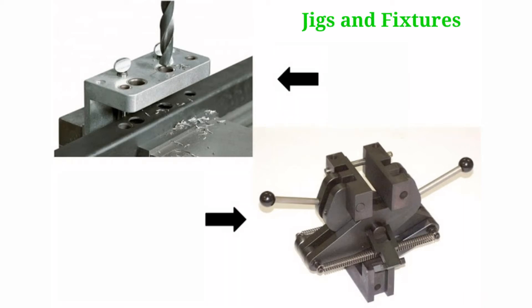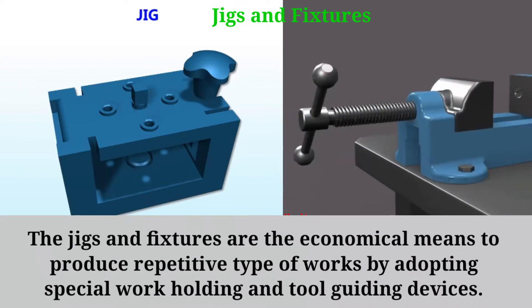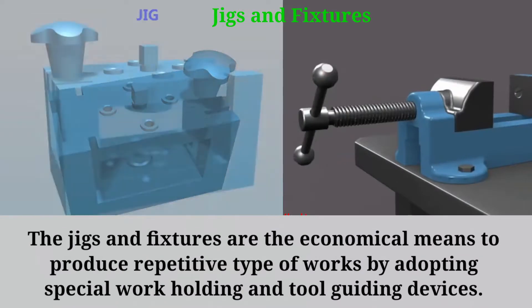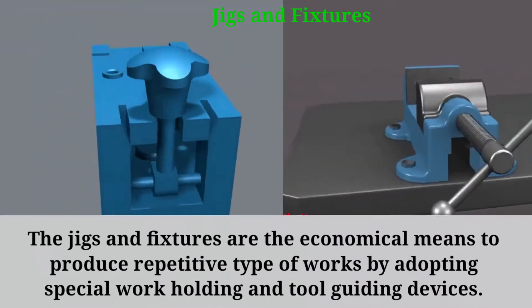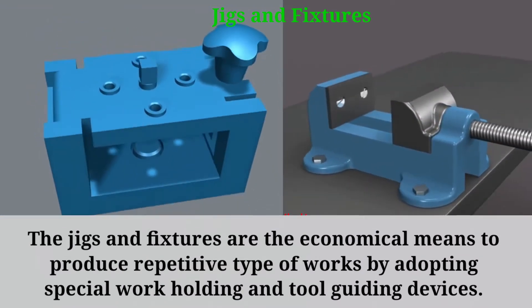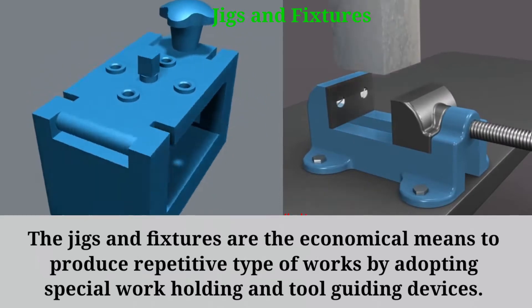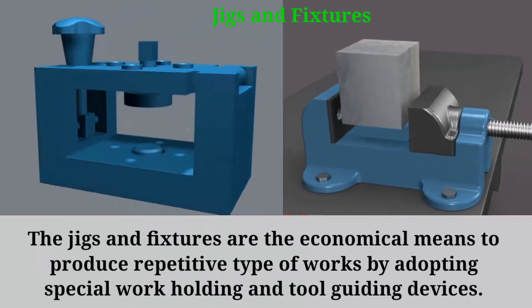Jigs and Fixtures. Jigs and fixtures are economical means to produce repetitive types of works by adopting special work holding and tool guiding devices.